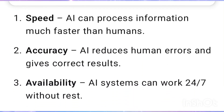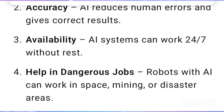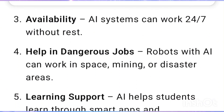Speed: AI can process information much faster than humans. Accuracy: AI reduces human errors and gives correct results. Availability: AI systems can work 24/7 without rest. Help in dangerous jobs: Robots with AI can work in space, mining, or disaster areas.